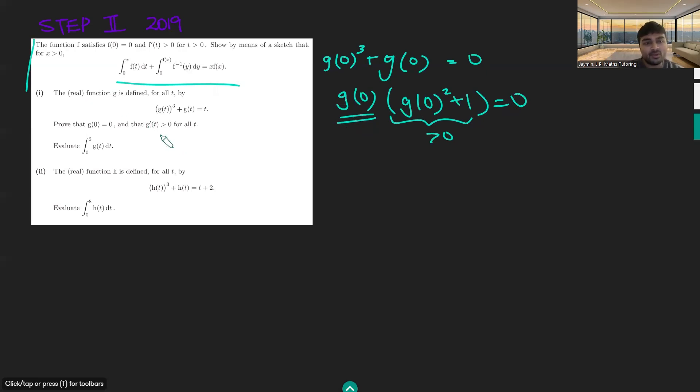Now, why is g'(t) positive? Well, we're just going to use implicit differentiation here. We're going to get 3g(t)² times g'(t) + g'(t) = 1. And so factoring out the g'(t) and then dividing, we get g'(t) = 1/(3g(t)² + 1). g(t), again, is a real number. So if you square it, it's going to be non-negative. And if you add one, it's going to be positive. So we've got one divided by a positive number. That's always going to be positive. Great.